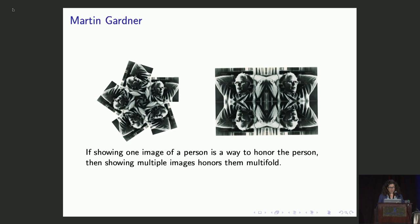If showing one image of a person is a way to honor the person, then it makes sense that showing multiple images honors them multifold. As you may know, these are symmetry types known as rosettes, which have rotational and, in the case of the figure on the right, reflection symmetry, though no translation symmetry.